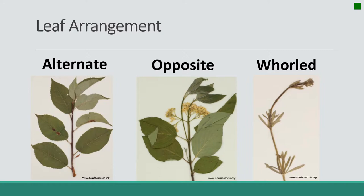Opposite leaf arrangement is where we have two leaves born from a single node, normally across from one another. As we go up the stem, we find a node, and out of that node comes one leaf to the right and one leaf to the left. Whorled leaf arrangement is when we have three or more leaves born from a single node, typically revolving around the stalk.